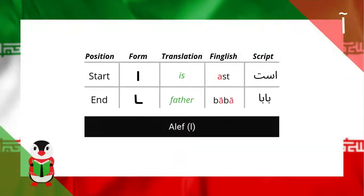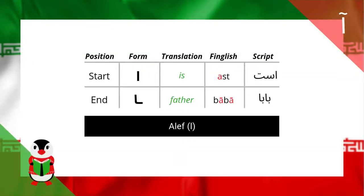Let's run through some examples for each form of Aleph. First, we will look at the first form, pronounced A. This form can only be used at the start or the end of a word. When the Aleph is at the start of the word, for example, AST, meaning 'is', the Aleph is a straight vertical line and left unattached to the rest of the letters.